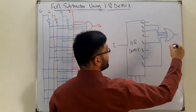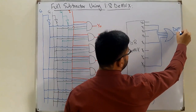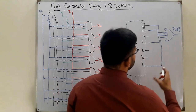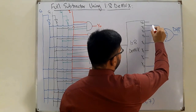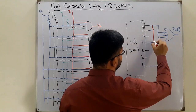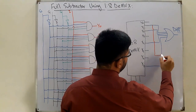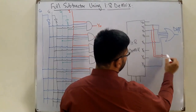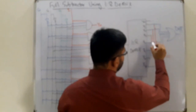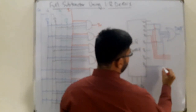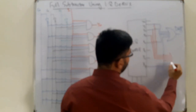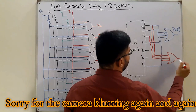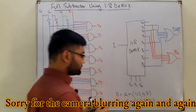The output of that OR gate gives you the Difference. For the Borrow output, take Y1, Y2, Y3, and Y7 — feed them to another OR gate. The output of that OR gate is your Borrow output.